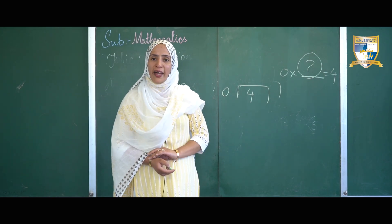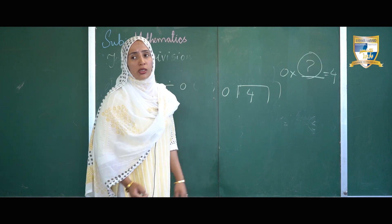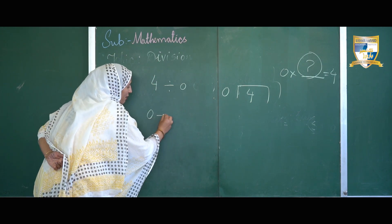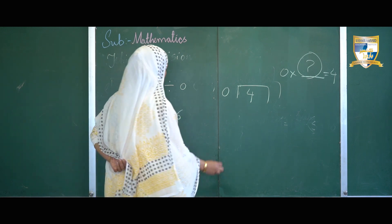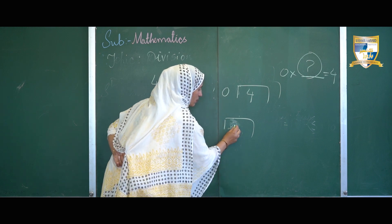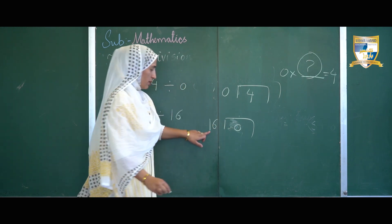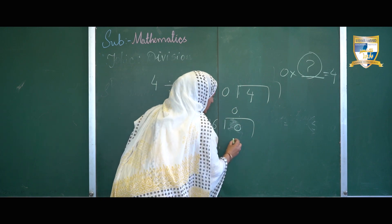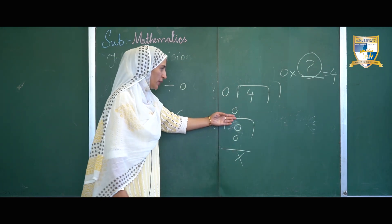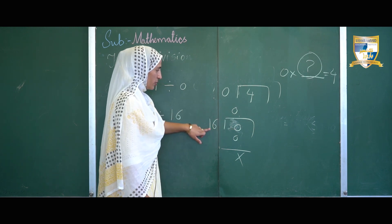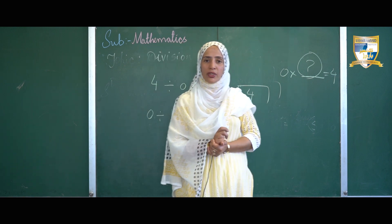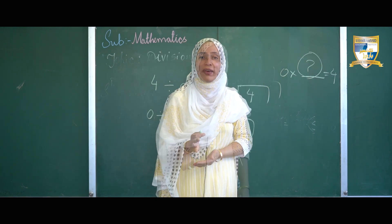The fourth division fact: when 0 is divided by any number, the quotient is always equal to 0. Here, I have divided 0 by 16 and you can see the quotient is equal to 0. This is all about division and its properties. Hope you understood today's video very well — we will meet in the next video.